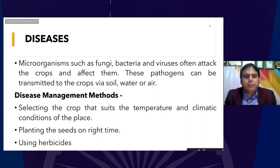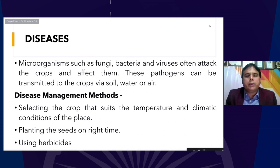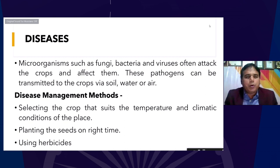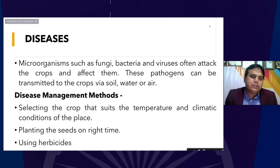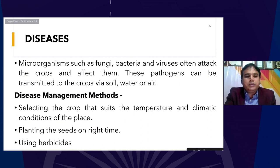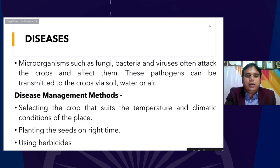Moving to another topic — diseases. Many diseases can take place in plants, caused by various microorganisms such as fungi, bacteria, and viruses, which attack crops and affect them. These pathogens can be transmitted through soil, water, or air. With the help of disease management methods, we select crops suited to the temperature and climatic conditions of the place. Planting seeds at the right time also helps in disease management, along with using synthetic or natural herbicides like orgyl.